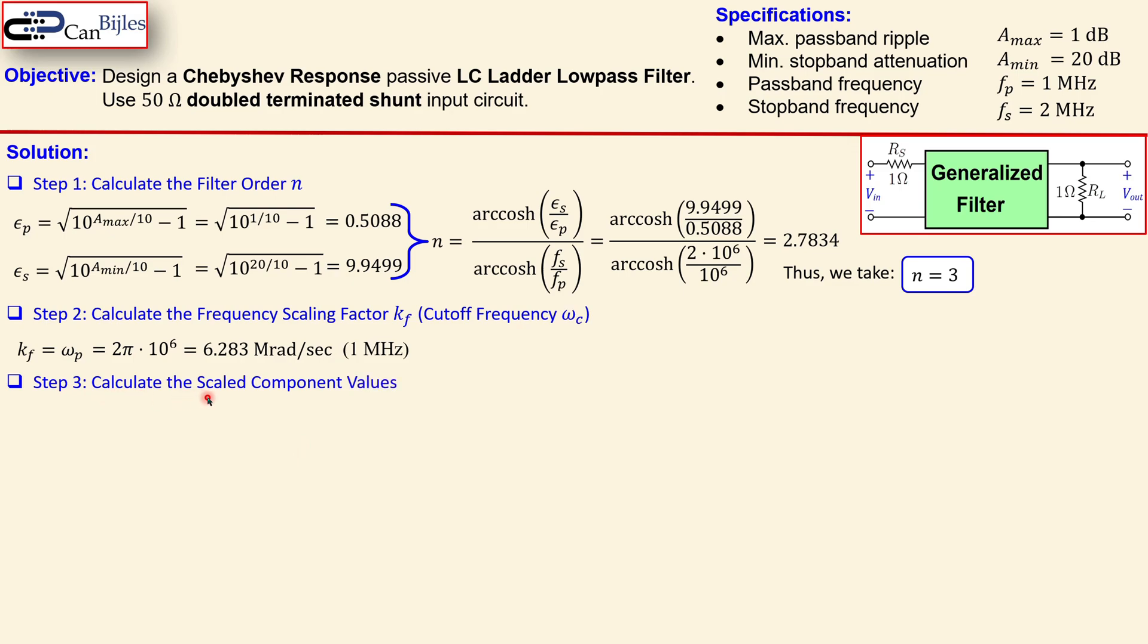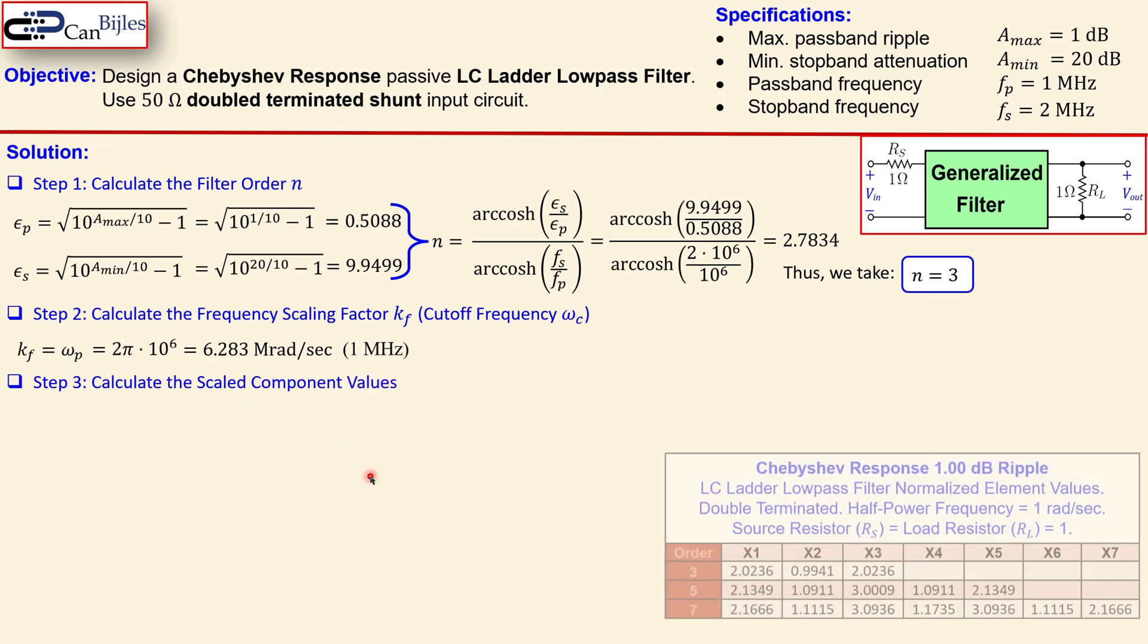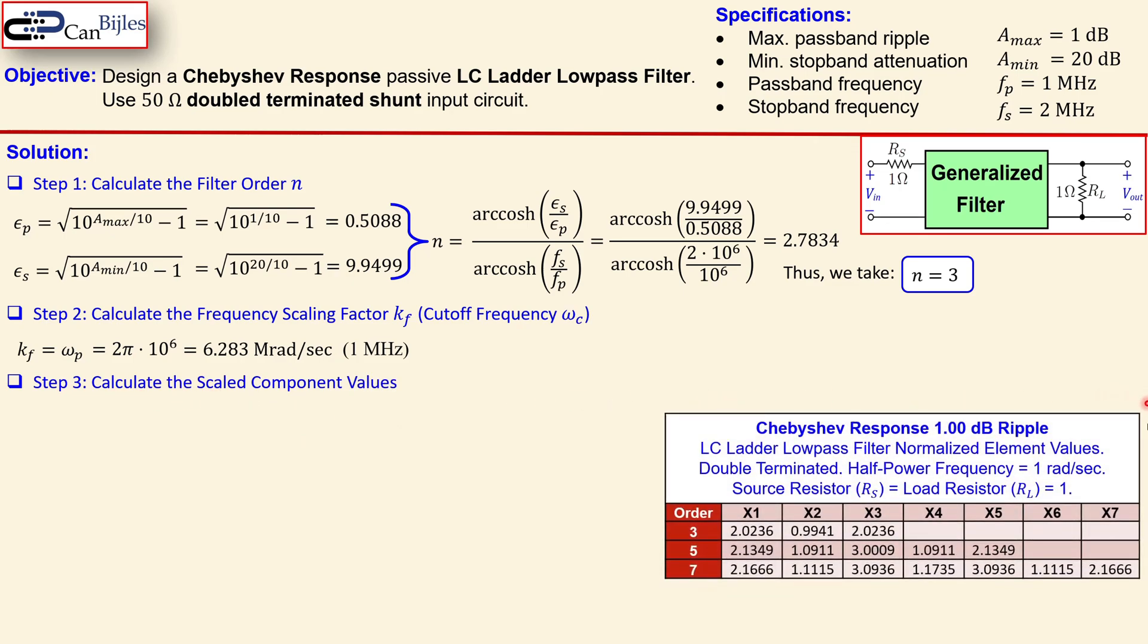So step 3 is calculate the scaled component values. We now require a table. This is the specific table for the Chebyshev response with 1 dB ripple because you look at this maximum passband ripple and then you take the specific ripple. It can be that you have for example here passband ripple of 0.5 dB then you need to use a different table. So we have now the specific table and you also see here the 3rd order, 5th order and 7th order designs.